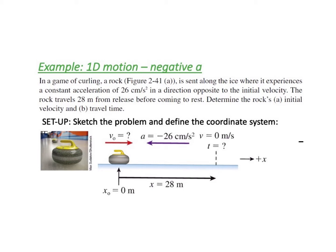So the example reads, in a game of curling, a rock is sent along the ice where it experiences a constant acceleration of 26 cm per second squared in a direction opposite to the initial velocity. The rock travels 28 meters from release before coming to rest. Determine the rock's initial velocity and travel time.